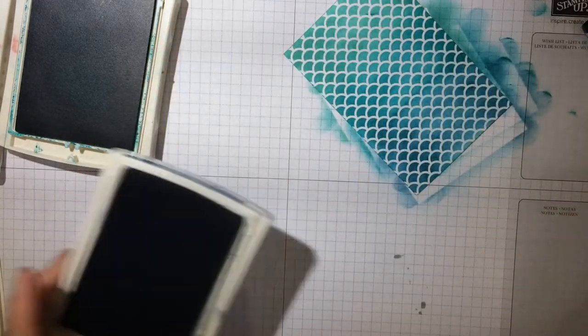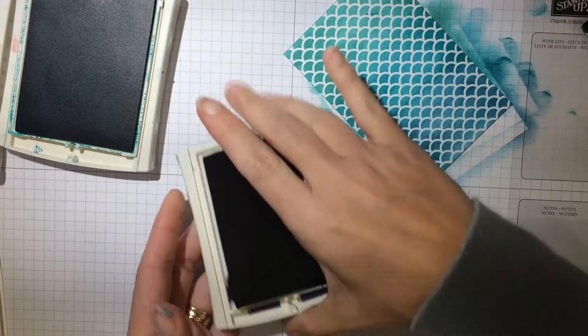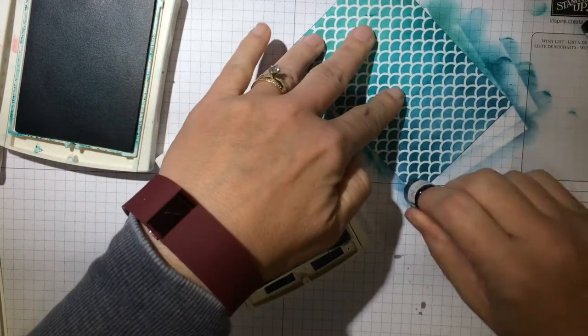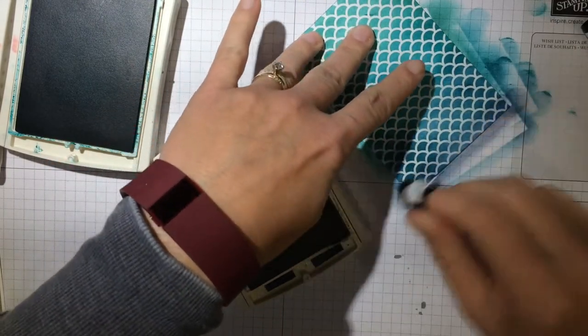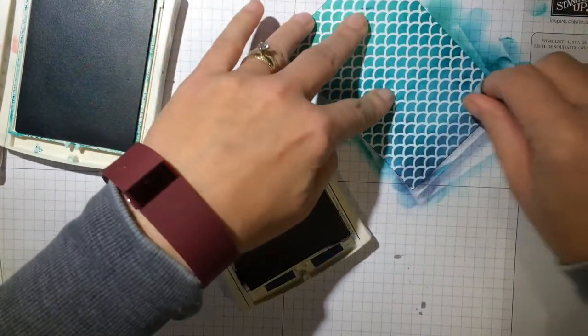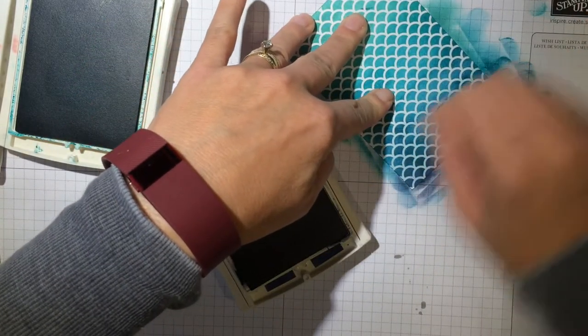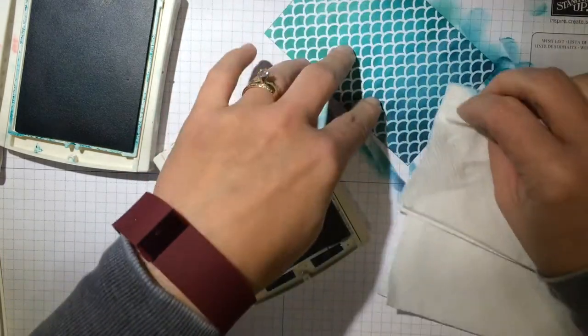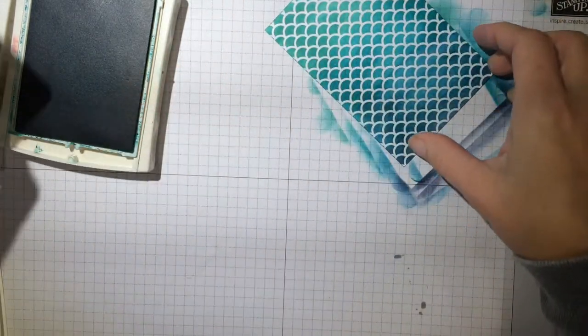Now, I felt like I needed a little more dark at the end, so I took my Night of Navy and I just did the bottom, a real small line here at the bottom. Go back with my Island Indigo and kind of blend that in. And that's it.